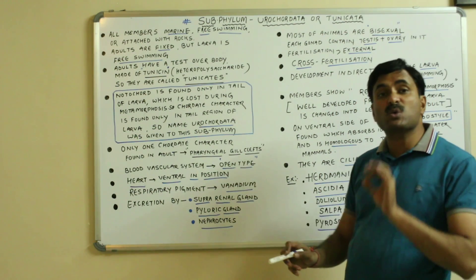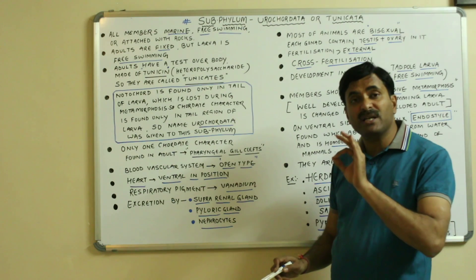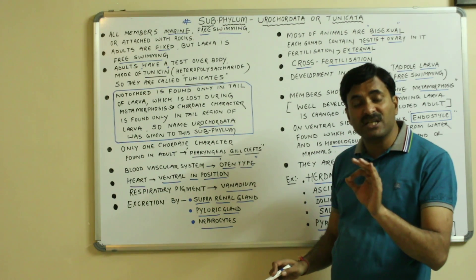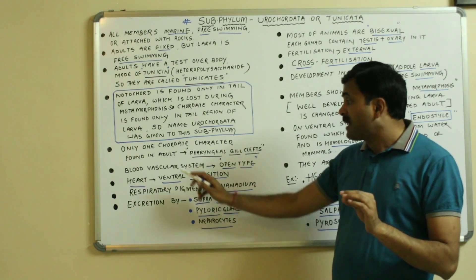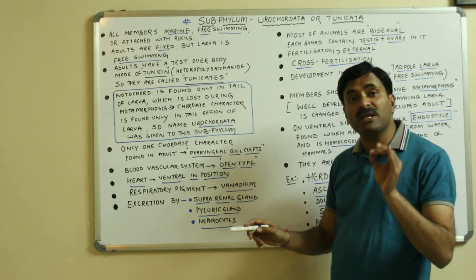The blood vascular system is open type means blood is not flowing in the closed vessels. It is found in open spaces and heart is ventral in position.